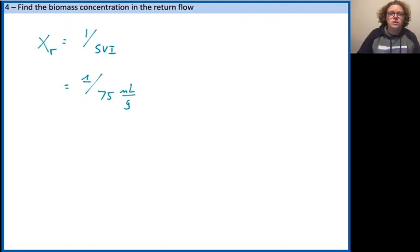The next question was to find the biomass concentration in the return flow. In other words, in that secondary clarifier, when everything settles to the bottom and we're pumping that sludge out to return it, what will be the biomass concentration in that sludge that we're returning? That's 1 divided by the sludge volume index. That's an empirically determined term. We were given that in this case.